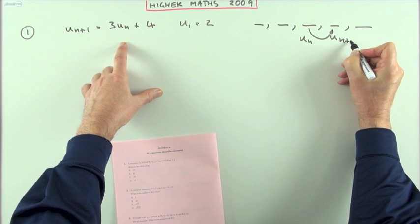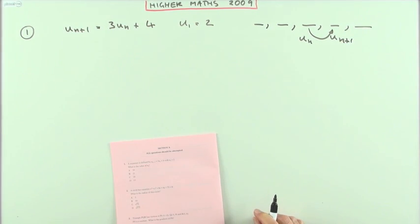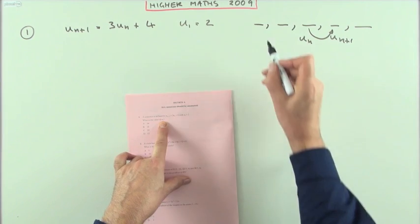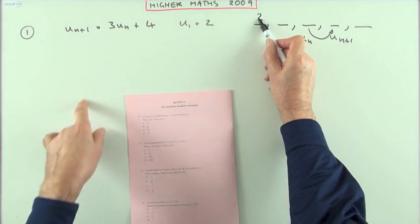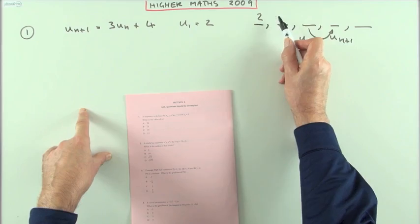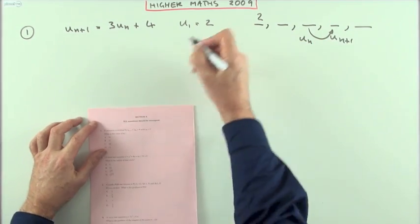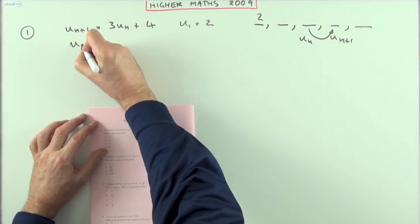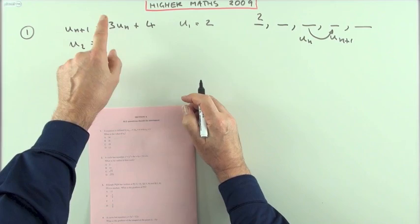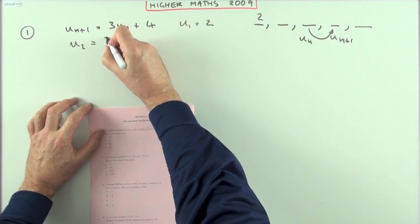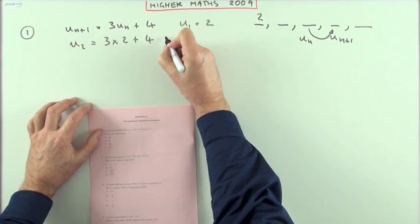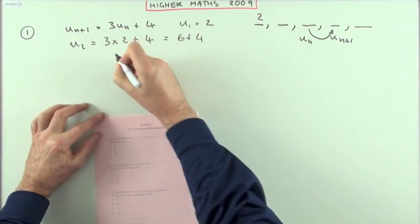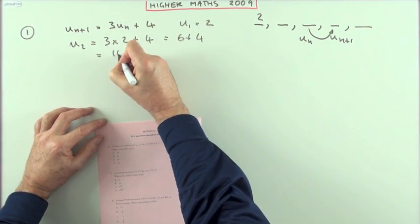From term u_n to term u_{n+1}. So if I want to get to term three in this case and I know term one, I'll have to use this pattern twice — first of all to get to the second term, then to get to the third. So what have you got? u1 is 2, so u2 must be, following the pattern, three times it: three times the two, add on four, so it'll be six plus four, which is ten.